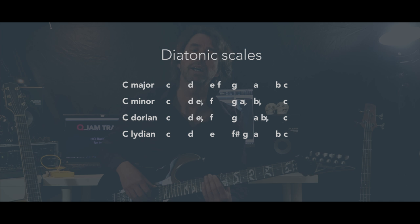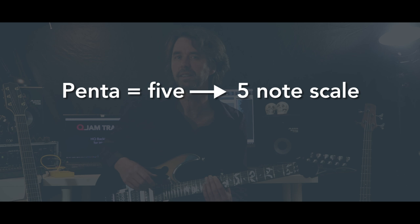That order determines the sound of the particular diatonic scale — like a major scale is different from a minor scale, which is different from a Dorian scale, which is different from a Lydian scale and so on. Now a pentatonic scale is not a diatonic scale. The main reason is that this scale lacks the half steps — it has only whole steps and third intervals. The word penta means five in Greek, and that gives away that the pentatonic scale is a five note scale.